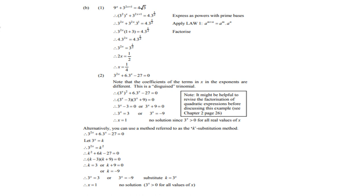Look at the second one. Note that the coefficients of the term in x in the exponents are different. So this is like a disguised trinomial. Note it might be helpful to revise the factorization of quadratic expressions before discussing this example. But nevertheless, 3 to the power 2x we can split as 3 to the power x all of it to the power 2. A little bit of a different approach as you can see. Then it looks like a trinomial.